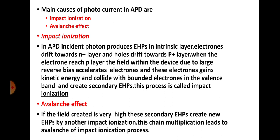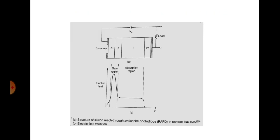If the reverse bias is very high, the field within the n-plus p junction is also very high, and the secondary electron-hole pairs produced by impact ionization in the p layer create further new electron-hole pairs by another impact ionization. This process continues as a chain reaction. This chain multiplication leads to an avalanche of the impact ionization process — newer electron-hole pairs are produced, which again hit other bound atoms, continuing as a chain reaction, resulting in the avalanche effect.